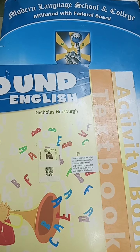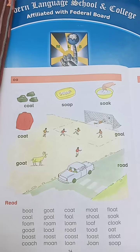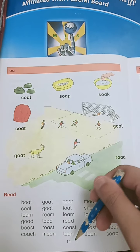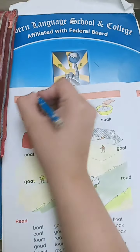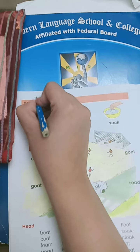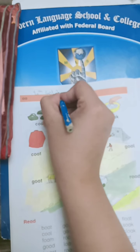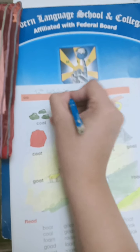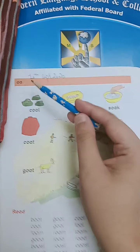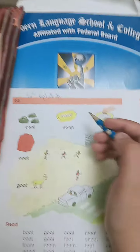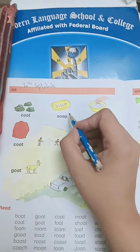Firstly, pick out your sound books, page number 14. Now class, it's page number 14. Today the date is 10th September, so write the date firstly: 10th September 2020. Now it's the OA sound.